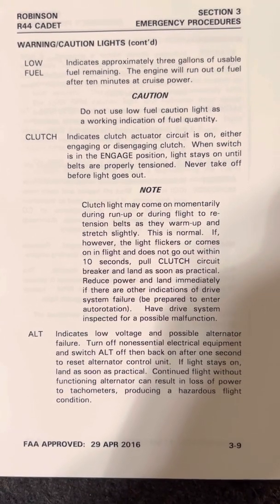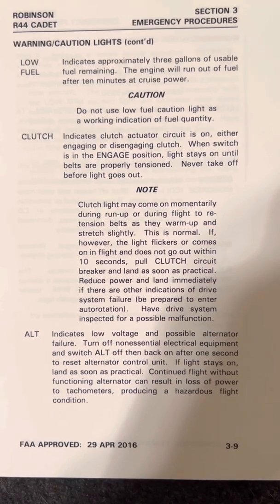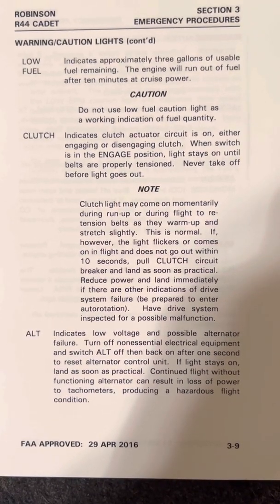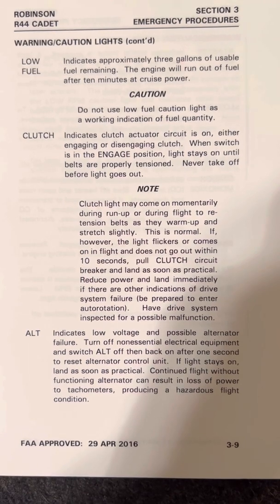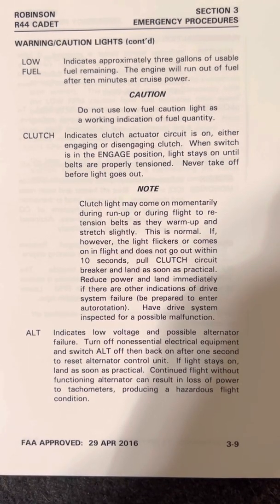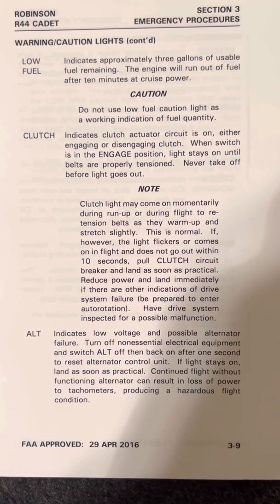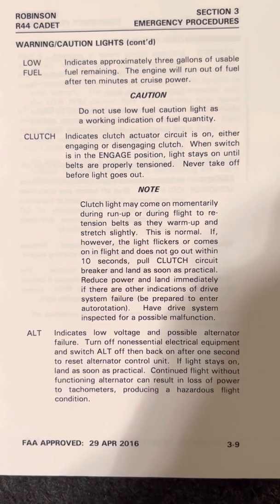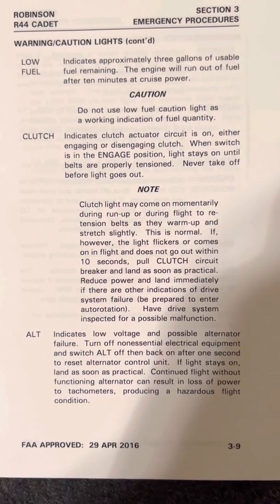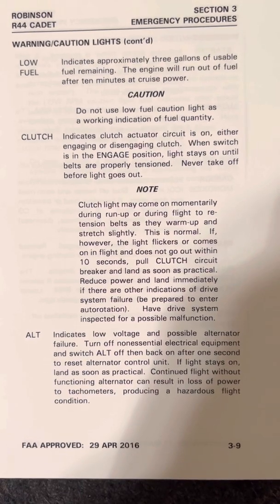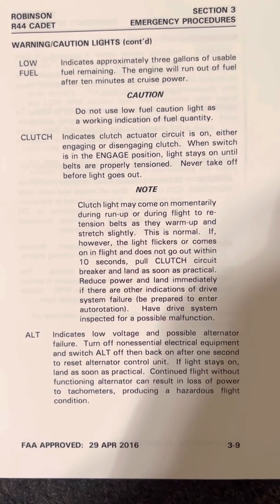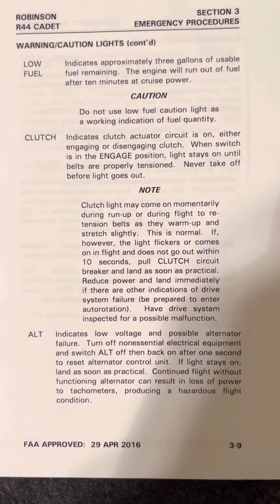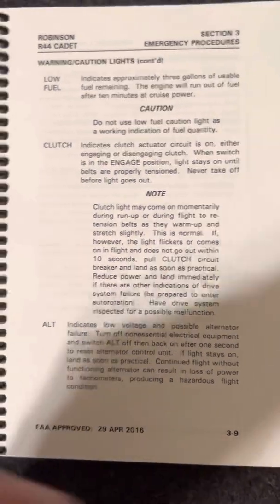Alternator light indicates low voltage and possible alternator failure. Turn off non-essential electrical equipment and switch alternator off, then back on after one second to reset alternator control unit. If light stays on, land as soon as practical. Continued flight without functioning alternator can result in loss of power to tachometers, producing a hazardous flight condition.